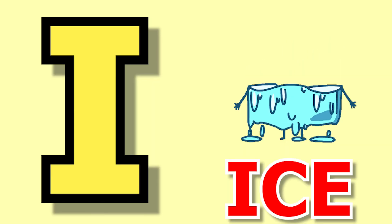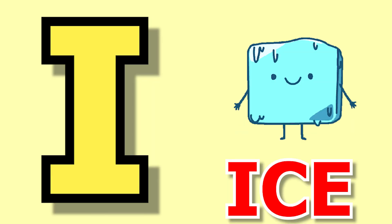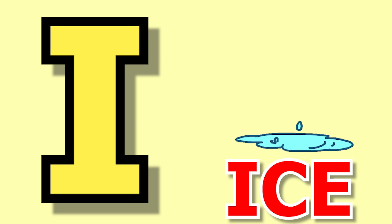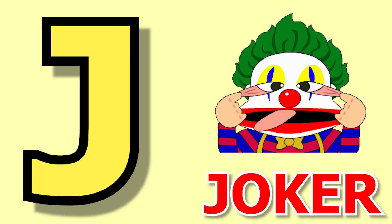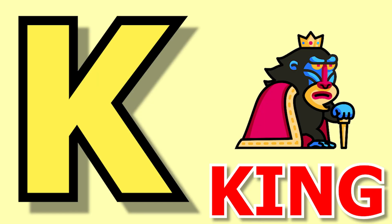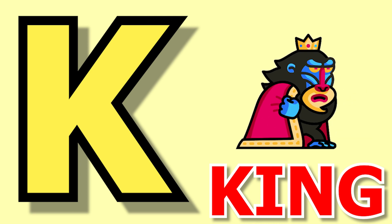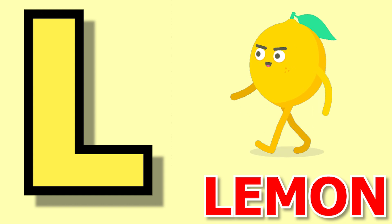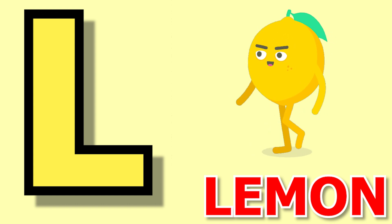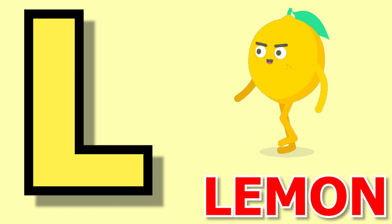I for ice, ice means bar. J for joker, joker means joker. K for king, king means raja. L for lemon, lemon means neembu.